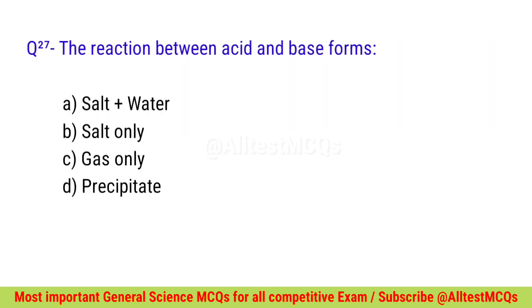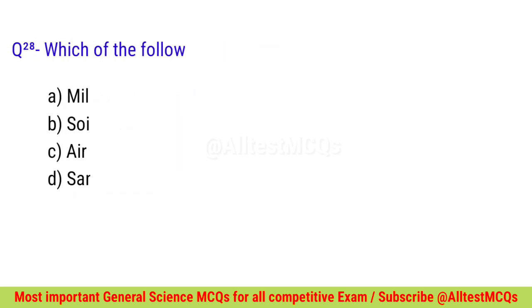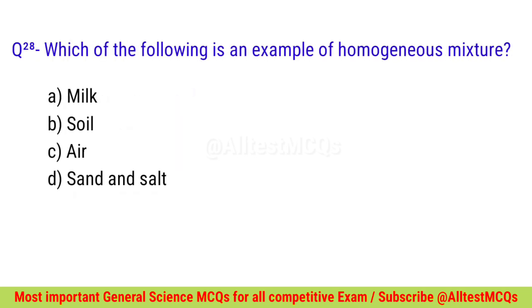Question number twenty-seven: The reaction between an acid and a base forms? Correct option is A — Salt and water. Question number twenty-eight: Which of the following is an example of a homogeneous mixture? Correct option is C — Air.